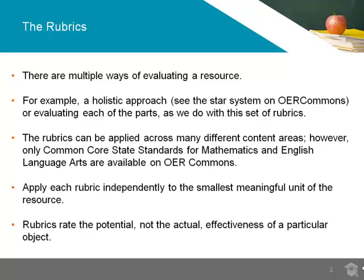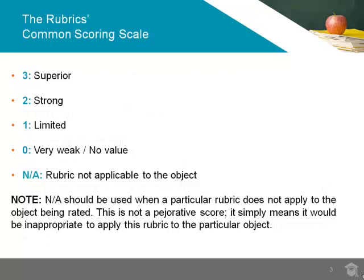Rubrics are used to rate the potential, not the actual, effectiveness of a particular object in an educational setting. The following five-point scoring system describes the predicted levels of quality. A three rating means the object is superior in that specific area. A two means it's strong. A one rating means it is limited. Rating an object zero means it is very weak in that specific area of quality. Users can rate an object NA when a particular rubric does not apply to the object being rated. NA is not a pejorative score — it simply means it would be inappropriate to apply this rubric to a particular object.